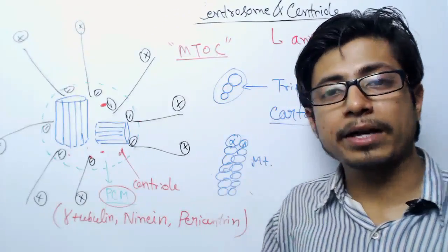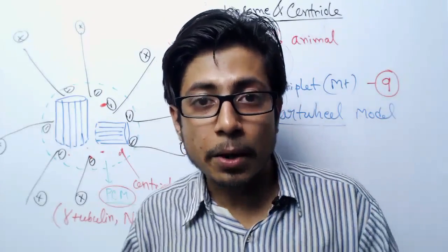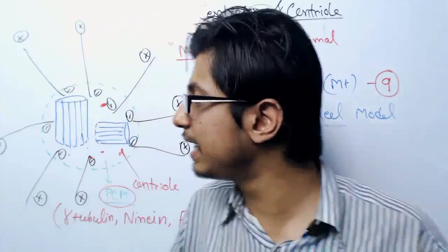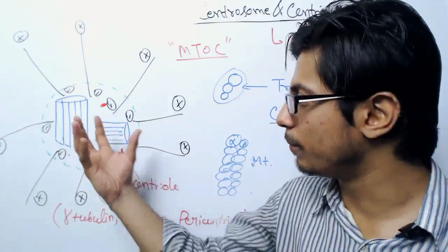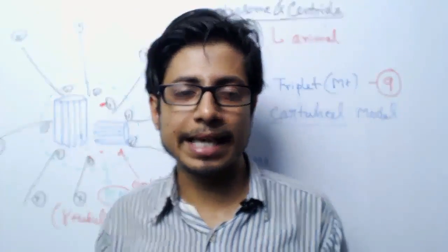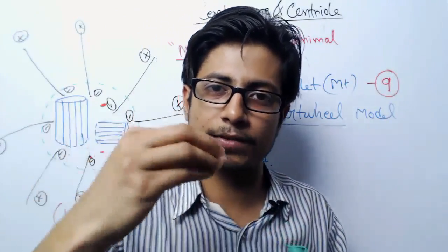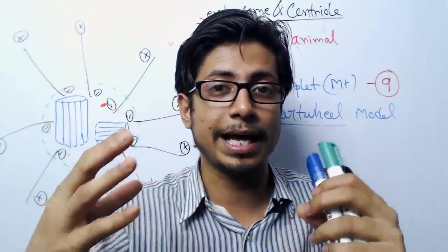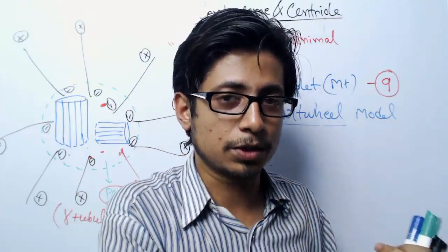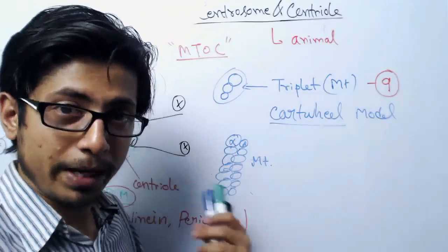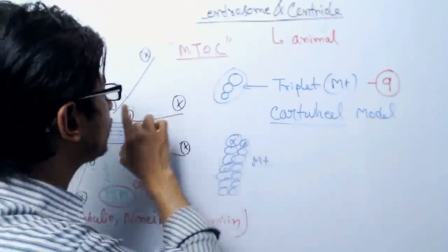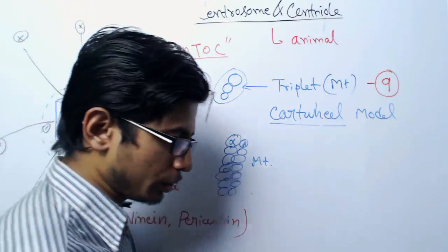MTOC stands for microtubule organizing center. MTOC is very similar to centrosomes but lacks the centriole barrel structure. Instead, they have a dense region with proteins responsible for the arrangement and polymerization of tubulin molecules to make microtubules.